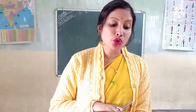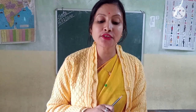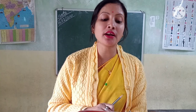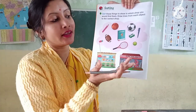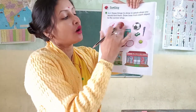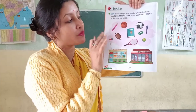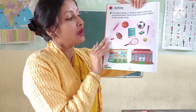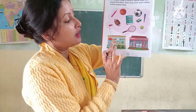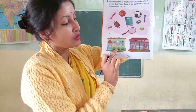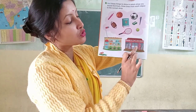Sort these things to show in which shop you would find them. Draw lines from each object to the correct shop. In this page some objects are given — some sports object pictures are given, and some things are given like book, pencil, eraser. Below, there is one picture of a book and board shop, and one picture of a sports shop.